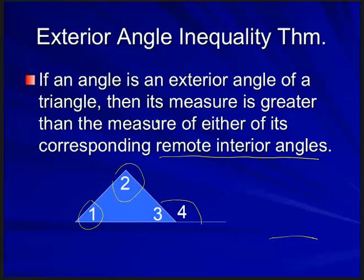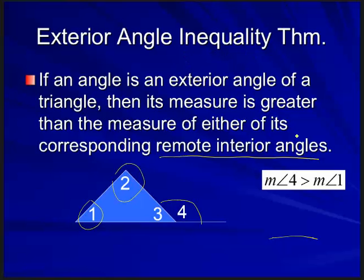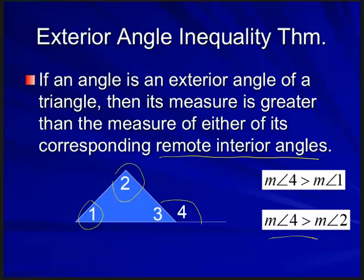This theorem says angle four is greater than either one of these remote interior angles. So we write inequalities: the measure of angle four is greater than the measure of angle one, and the measure of angle four is greater than the measure of angle two.